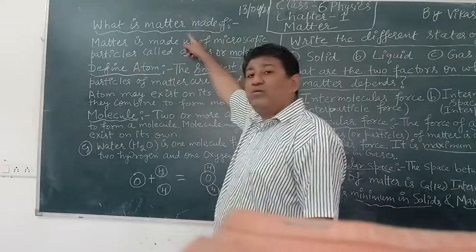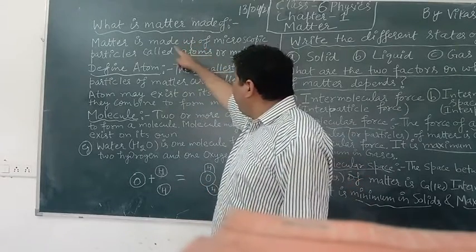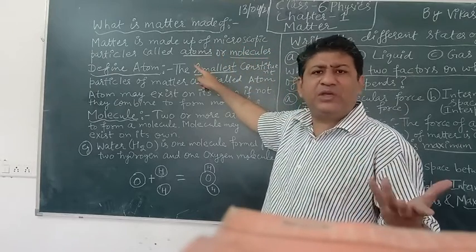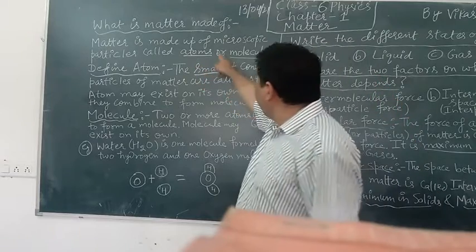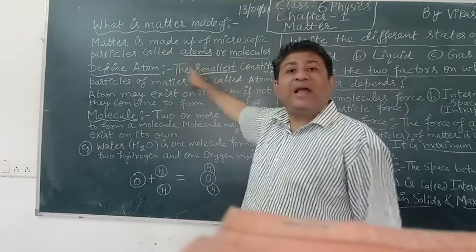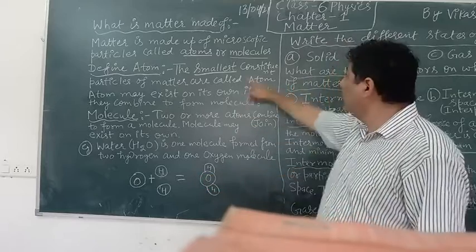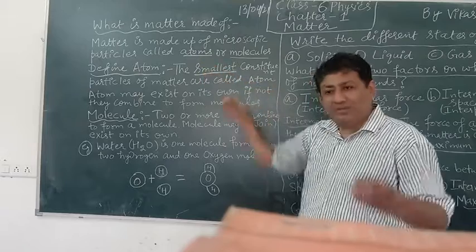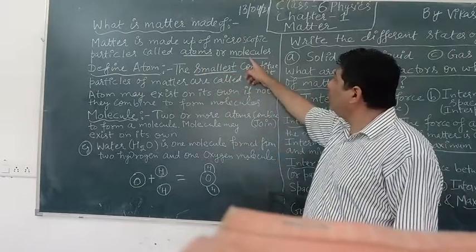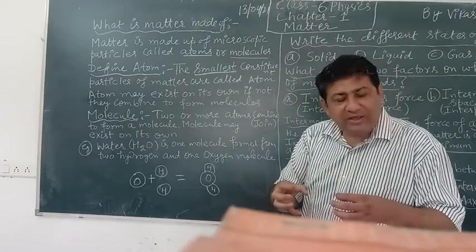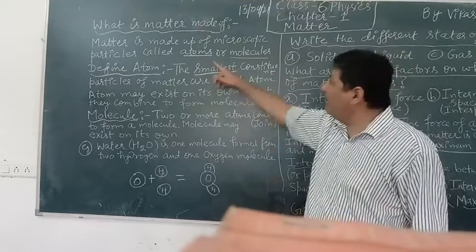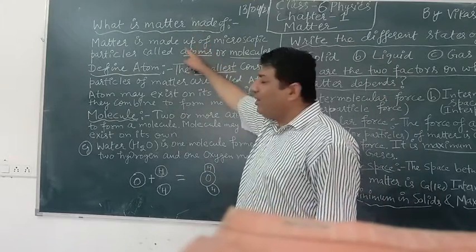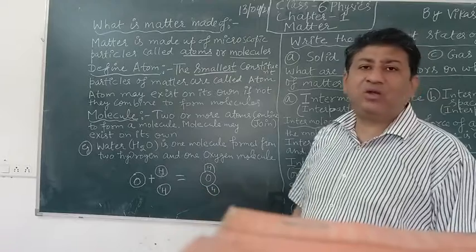Similarly, what is Matter made of? So Matter is made up of microscopic very tiny particles which we cannot see with our naked eyes. These microscopic particles are called atoms or they can be molecules. Atoms mil ke molecules bana hai. Atoms chhote hotte hai. Molecules atom se bada hatta hai. So they are the constituent particles of matter.